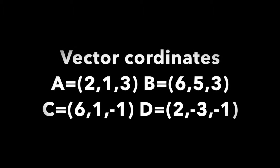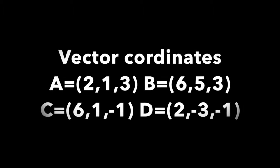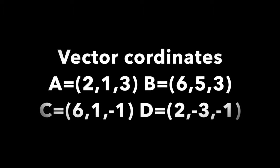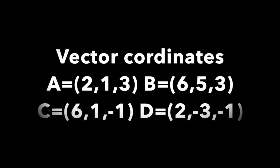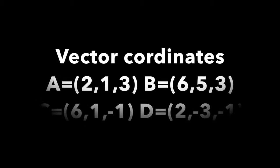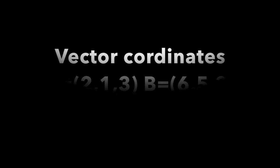D has vertices A equal to (2, 1, 3), B equal to (6, 5, 3), C equal to (6, 1, -1), and D with coordinates (2, -3, -1).